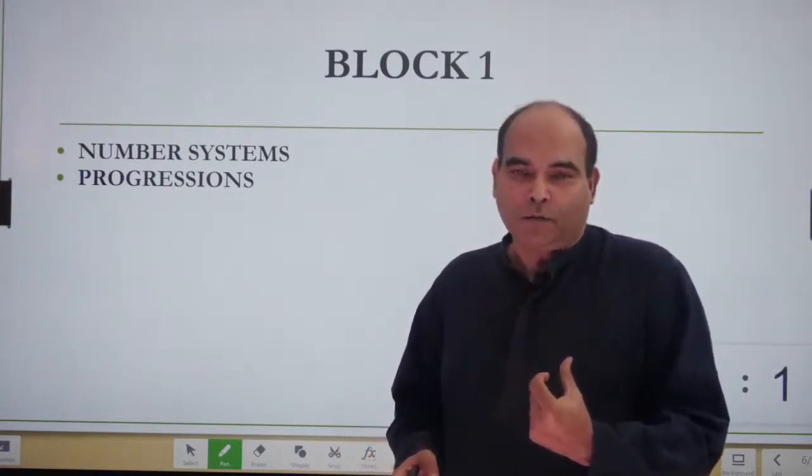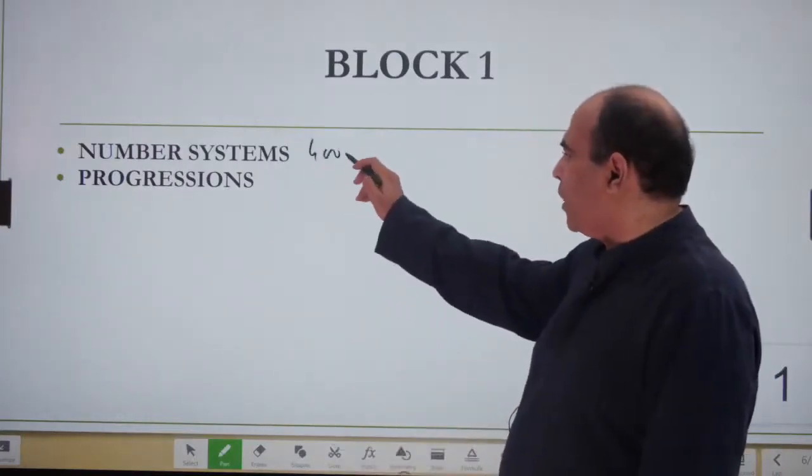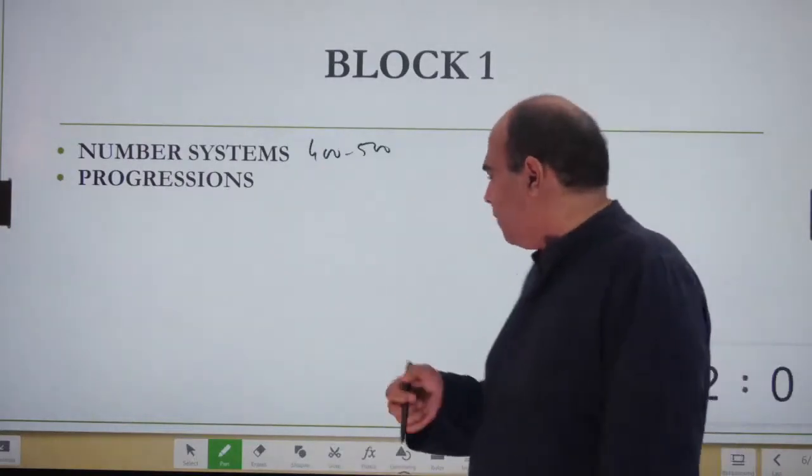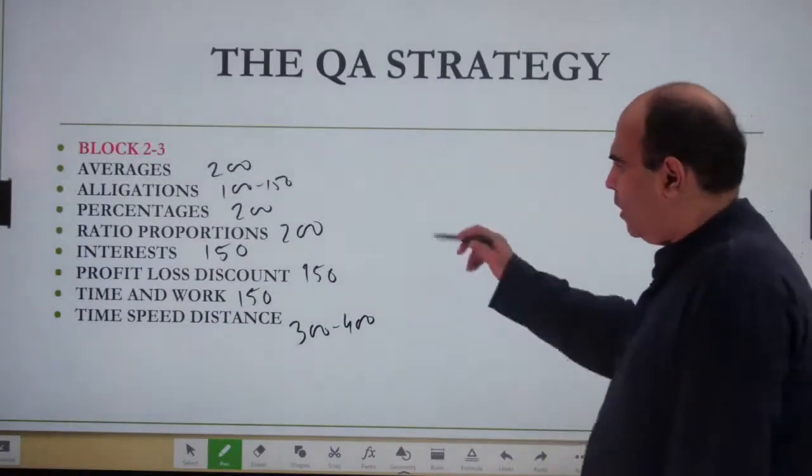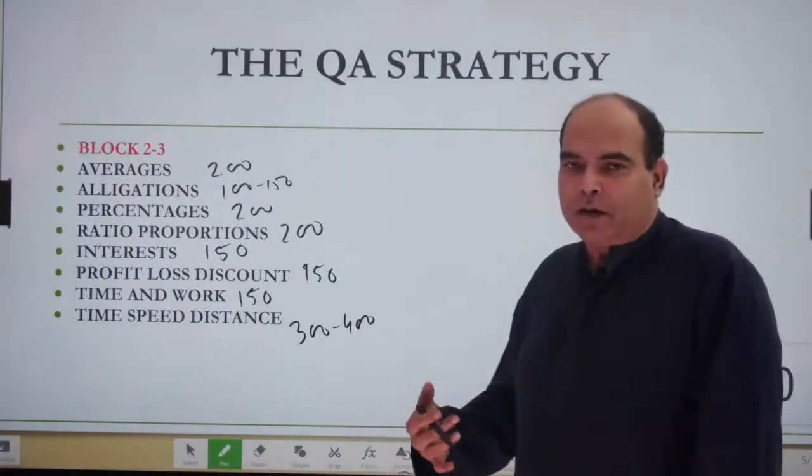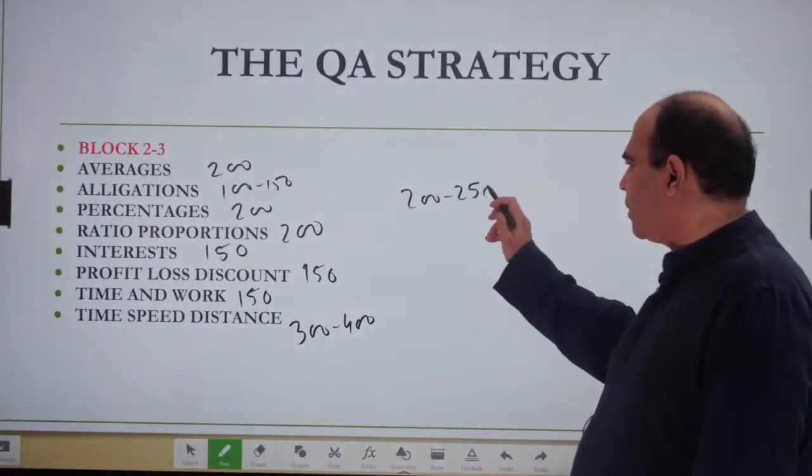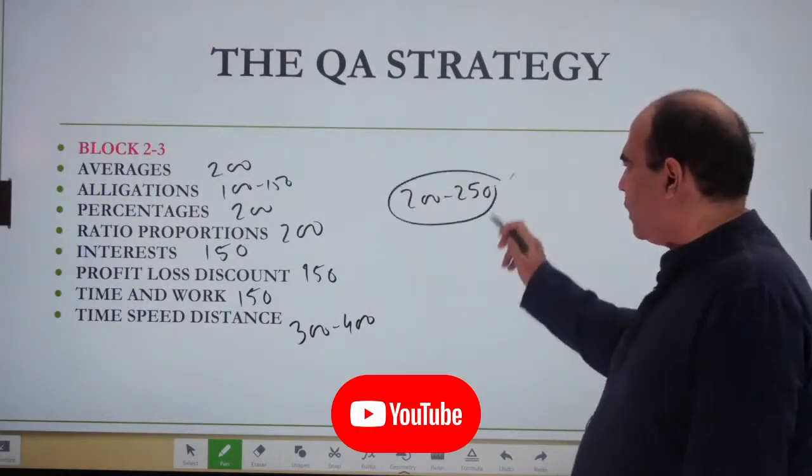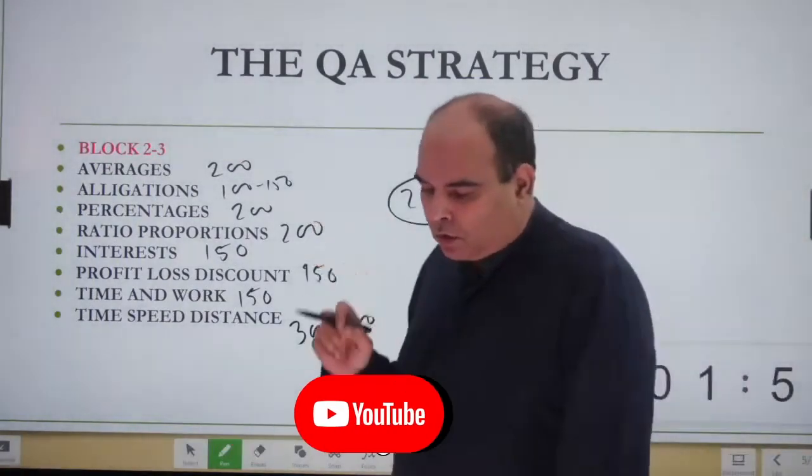Number systems is a 400-500 question chapter. The thumb rule when talking about how much time it should take—you have to take the solve in a five to six-month preparation context. This has to be the number of questions covered per week in quants while doing the DILR work.